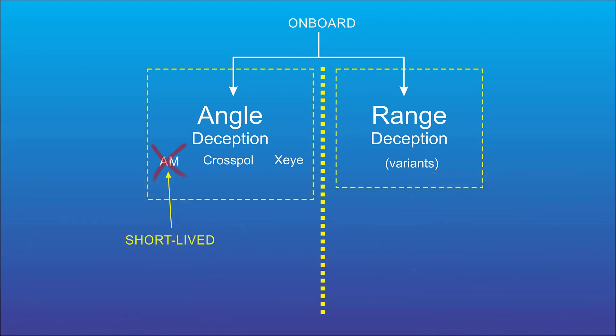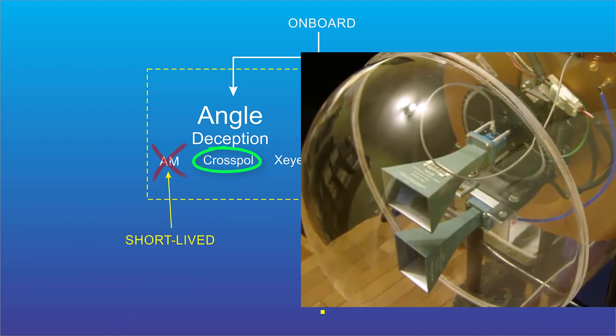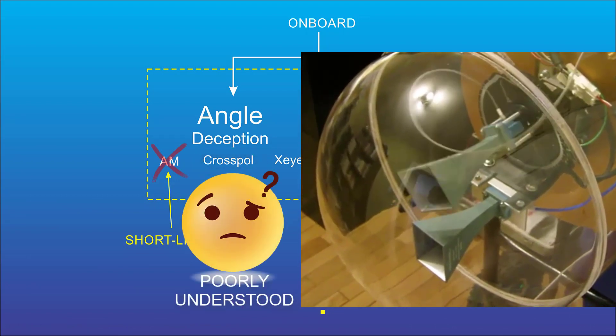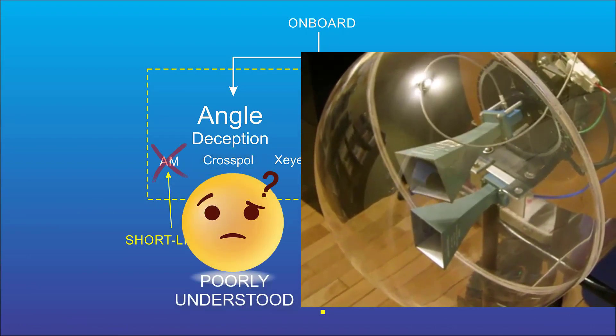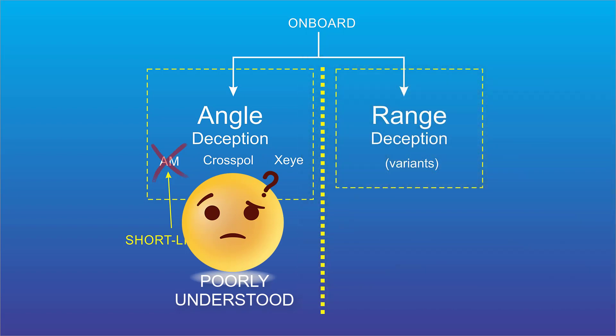So next up is cross-pole. It's easy to do for linearly polarized radars, but it's poorly understood. It produces interesting angle errors, but the how and the why was unclear in the early days, up to present day.